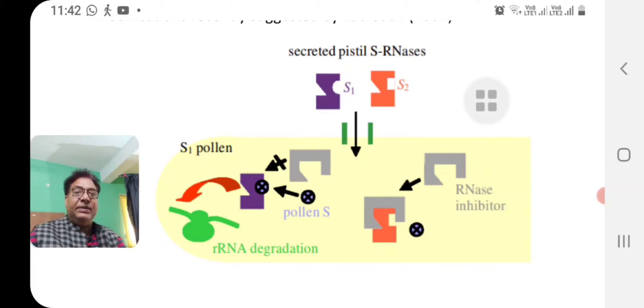There are two male determinants. One is an sRNase inhibitor, drawn in grey. The other protein is called S protein, that is a homo-tetrameric protein, the black colored rounded structure. If the sRNase inhibitor binds with the sRNAs, then the sRNA will not be able to function and it will not degrade the rRNA of the pollen tube. And the pollen tube germination will continue.